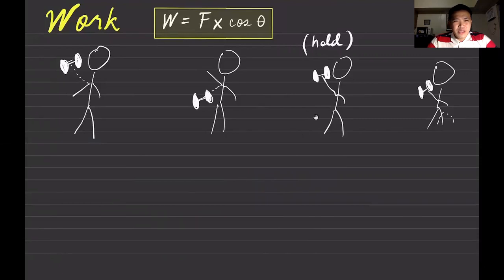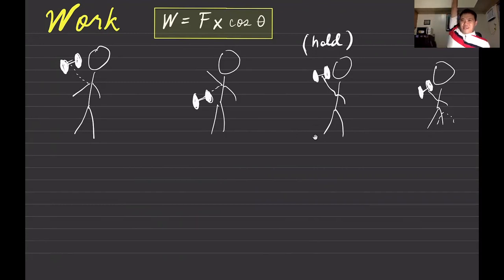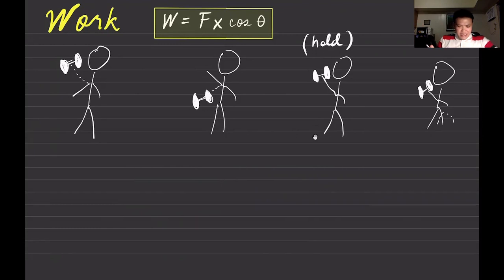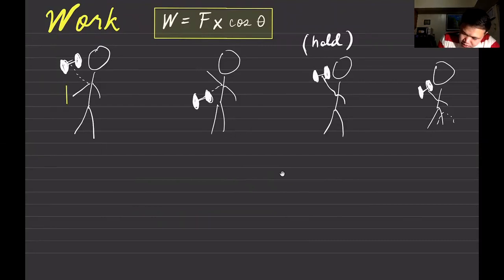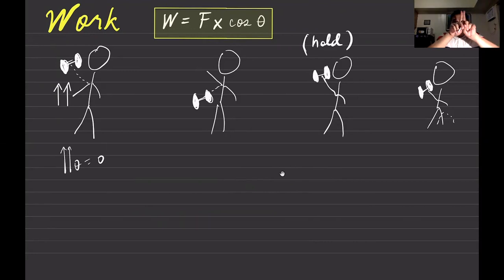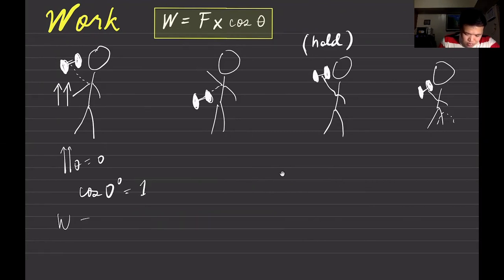Consider different situations. Say I have a heavy dumbbell and I lift it up. The force I apply is upward, and the distance covered is also upward. Applying the definition W = F × d × cosθ: the force is upward, the distance is upward, so the angle between them is zero. Cosine of zero is one, so the work is positive — this is positive work.